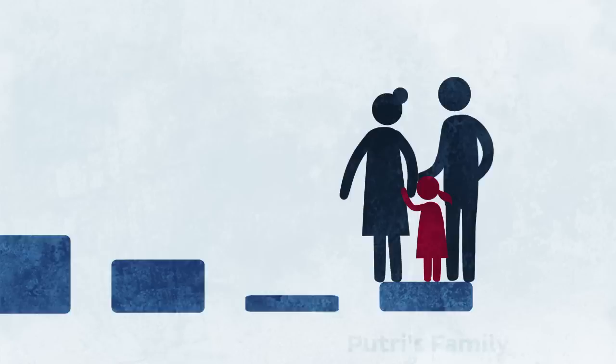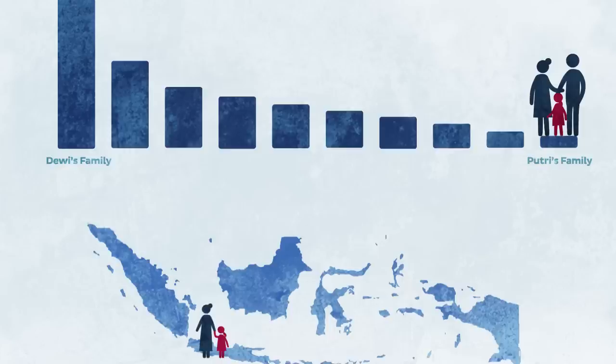Dewi's family is rich and belongs to the top 10% of households in terms of income. Putri's family is not as fortunate. They are in the bottom 10% of households, part of the 28 million people who live below the poverty line.